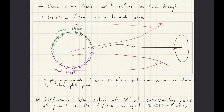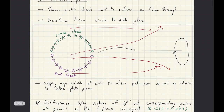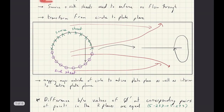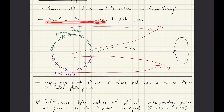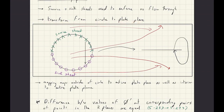For the non-circulatory part, the way we derive that contribution is through the combination of source and sink sheets that enforce the no flow-through or no penetration boundary condition. We work in the circle plane and then transform to the plate plane.